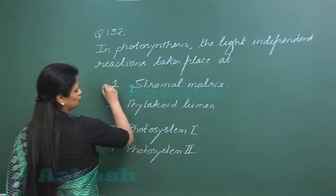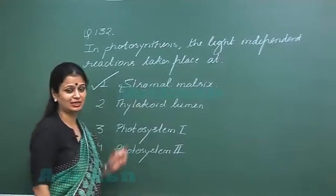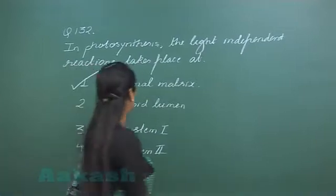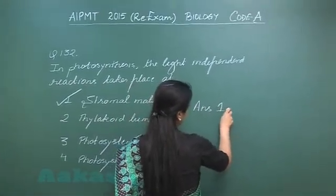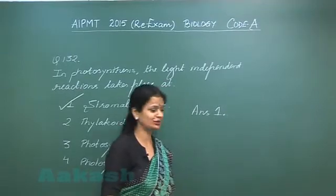So the dark phase occurs in the stromal matrix, and the light phase occurs in the thylakoid. So the right option here is option number one. Let's move on to the next question.